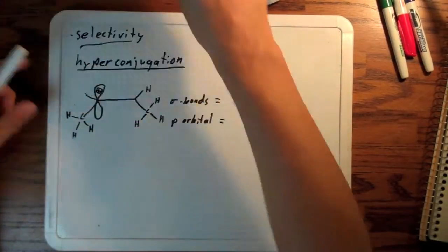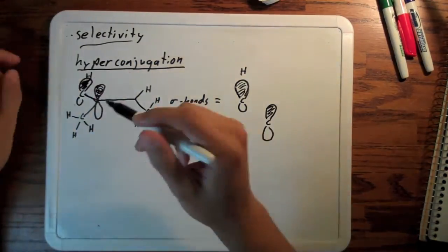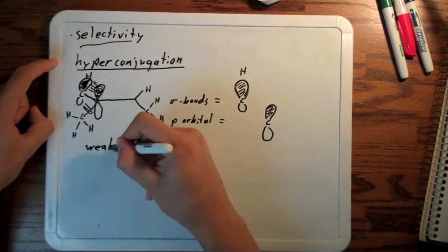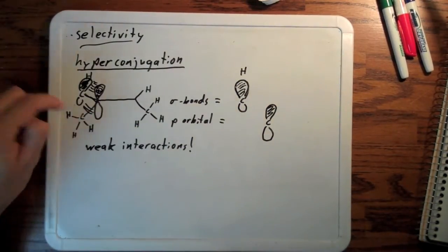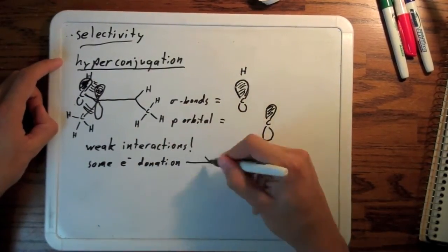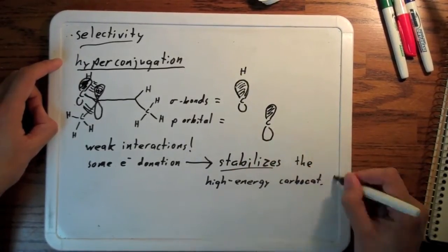Now I'm actually going to draw one of these sigma orbitals into the methyl group next to the empty p orbital. Now when you have two orbitals like this next to each other with similar wave functions, and one of them has electrons and one doesn't, the one with electrons will donate its electrons into the one that doesn't, at least sometimes a little bit. This slight donation of electrons stabilizes the positive charge.